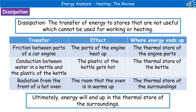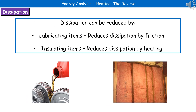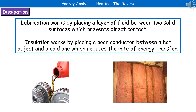Ultimately, energy will end up in the thermal store of the surroundings. Because dissipation generates wasted energy, we want to reduce it as much as possible. There are two ways to achieve this: first, we can lubricate items to reduce dissipation by friction; second, we can insulate items to reduce dissipation by heating. Lubrication works by placing a layer of fluid between two solid surfaces, so they don't have the direct contact that causes friction. Insulating a surface means placing a poor conductor between a hot object and a cold one to reduce the rate of energy transfer.